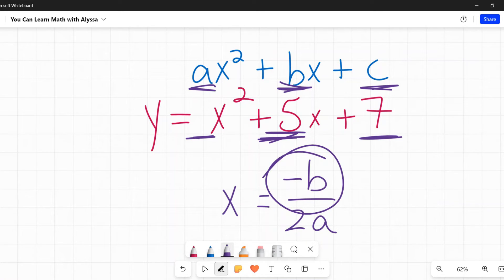So the opposite of B, be careful there. If it says negative B and this were already a negative, it's the opposite of that. Be careful on that one. So the opposite of our positive 5 would be a negative 5. And then 2 times our A. Our A is this invisible number 1. So 2 times 1 is 2. So there we have X equals negative 5 halves.